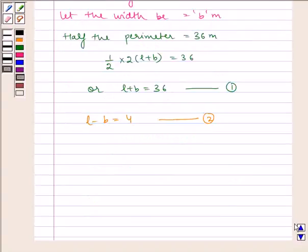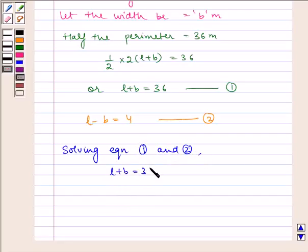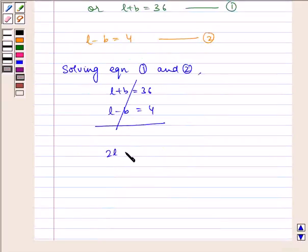Now, solving equation 1 and 2, we get L plus B equals 36 and L minus B equals 4. On adding, this gets cancelled. So we get 2L equals 40, which implies L equals 20 meter.